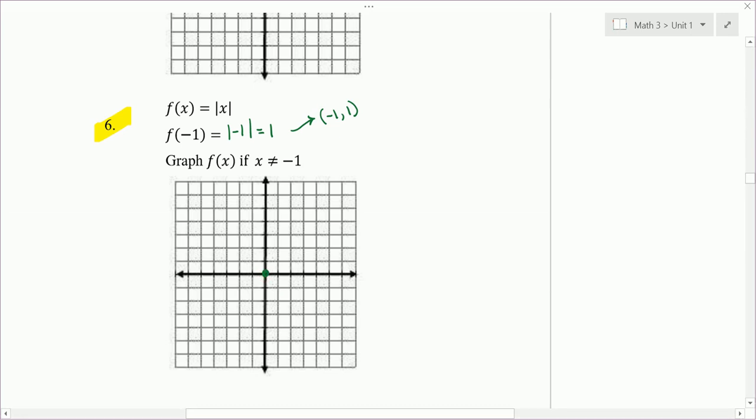And first I'm going to graph it again without the restriction, have a sense of what I'm looking at here. So it goes through 0,0, negative 1, 1. It's a V shape. This is the left side of the V. Here's the right side of the V. So that's with no restriction.